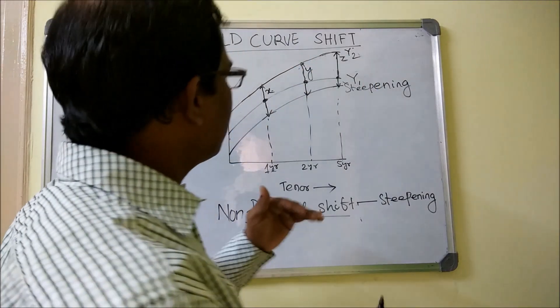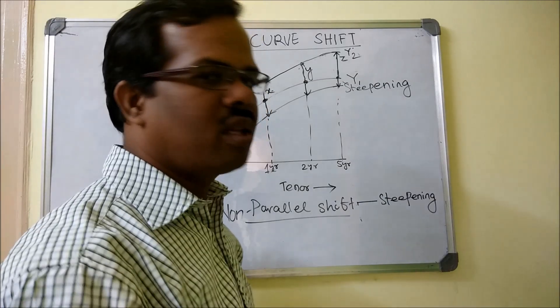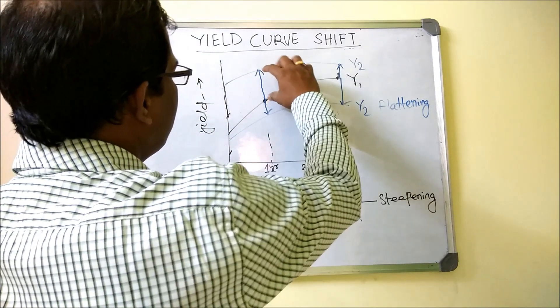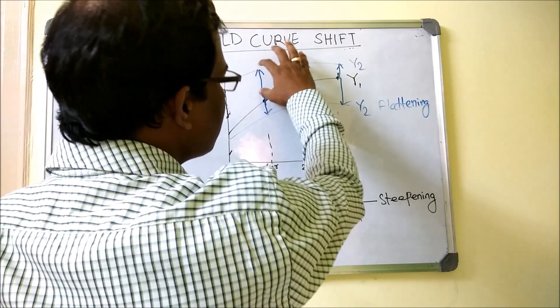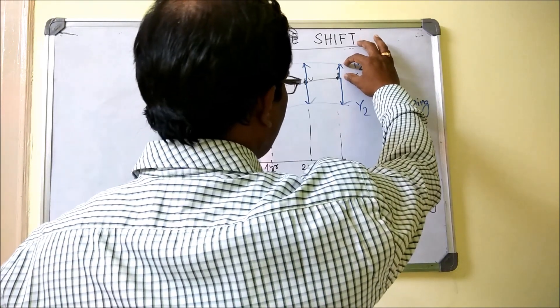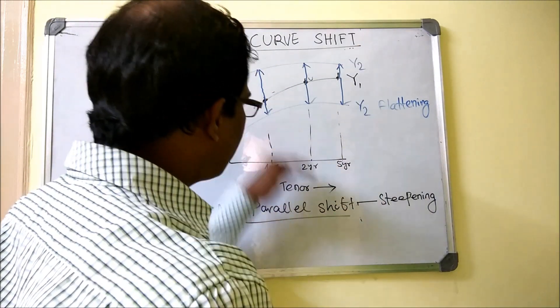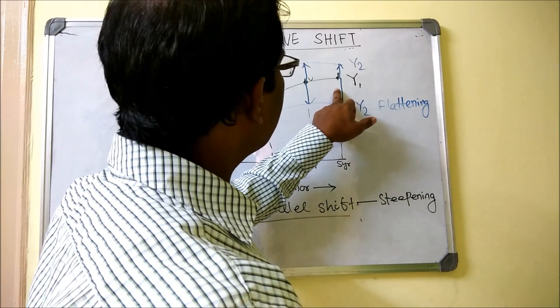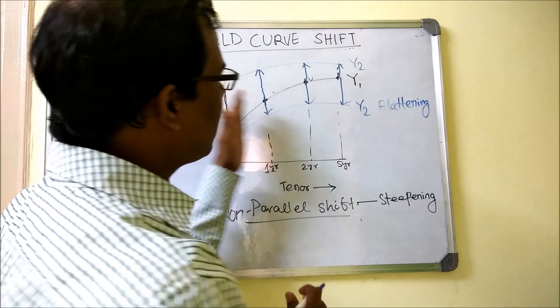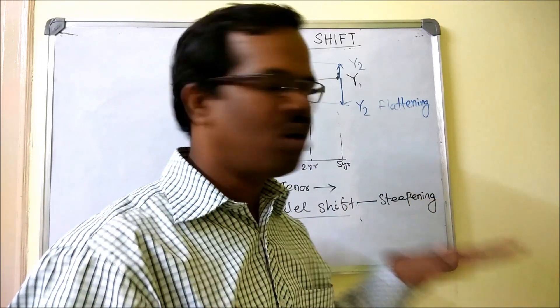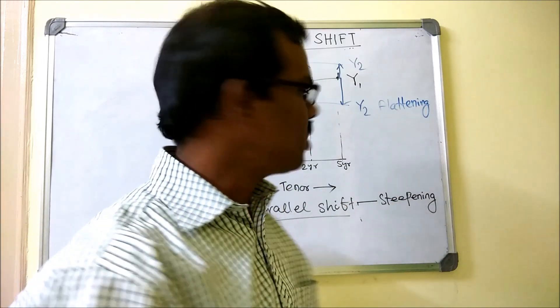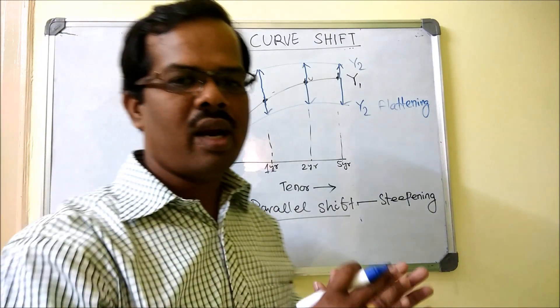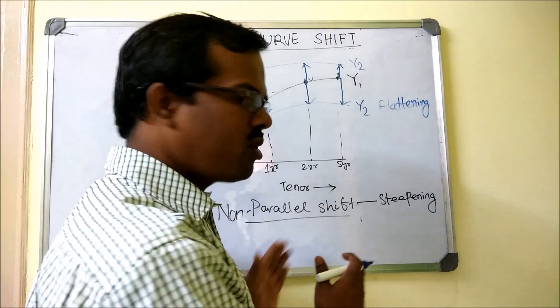There is also another case: the flattening of the curve. This flattening happens when the increase in the short-term rates is much bigger than the increase in the long-term rates, or when it decreases, the decrease in the short-term rates is much lesser than the decrease in the long-term rates. In that case we will call it as the yield curve is flattening, or it looks like a flat surface. So we understood the parallel shift we discussed, and then we discussed about the non-parallel shift and the two categories of non-parallel shift: one is the steepening, the other one is the flattening.